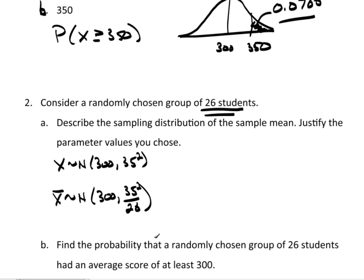Something I want to point out: this denominator is n. Well, when we talked about the population distribution of individuals, n was also there — it just happened to be 1. That's why we never bother to write it, because anything divided by 1 is itself. But when n is not equal to 1, we absolutely have to write it, because it plays a big part in our calculation.